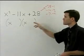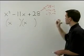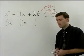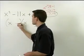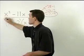So which pair of factors adds to negative 11? The negative 7 and the negative 4. So we're going to use those in our two binomials. And that's our answer.